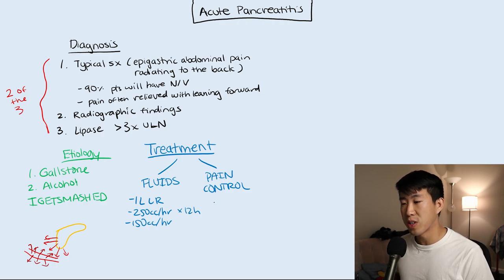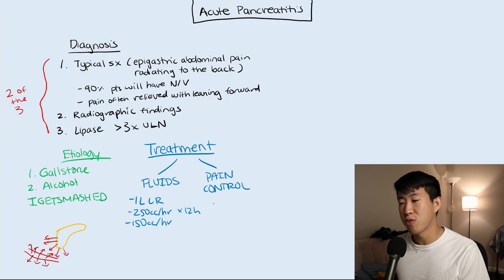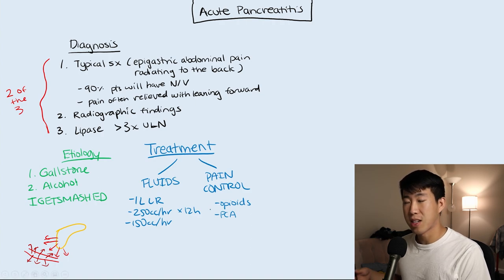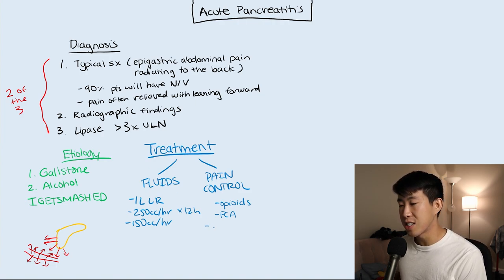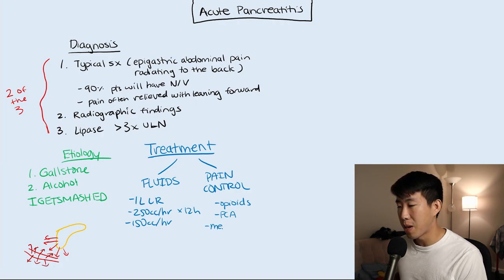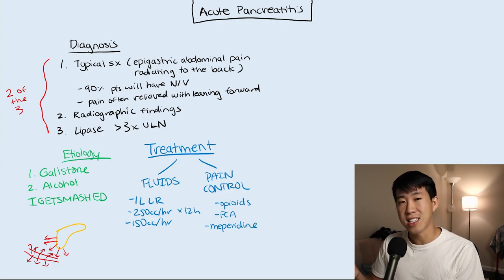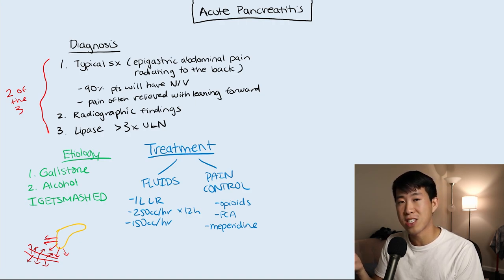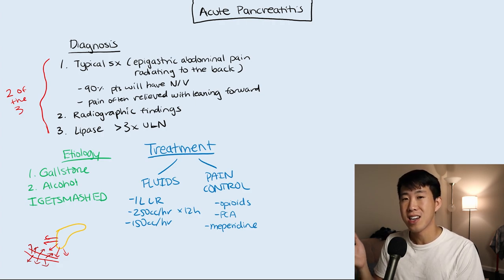For pain control, it's very important to get these patients on a good pain regimen, usually involving opioids since pancreatitis is severely painful. Sometimes you'll need a PCA pump — patient-controlled analgesia — to help optimize pain control. One opioid thought to have slightly better effects in pancreatitis is meperidine, as it's believed to cause less sphincter of Oddi spasms. The evidence for this isn't that strong, but you may get asked what the best opioid for pancreatitis is.